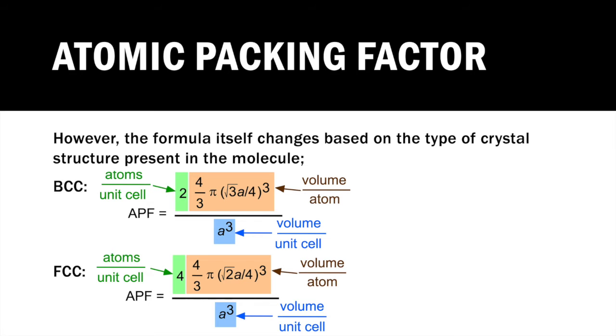So for example, for the body centered structure, the amount of atoms per unit cell becomes 2, and the volume changes from 0.5a to the square root of 3a divided by 4.